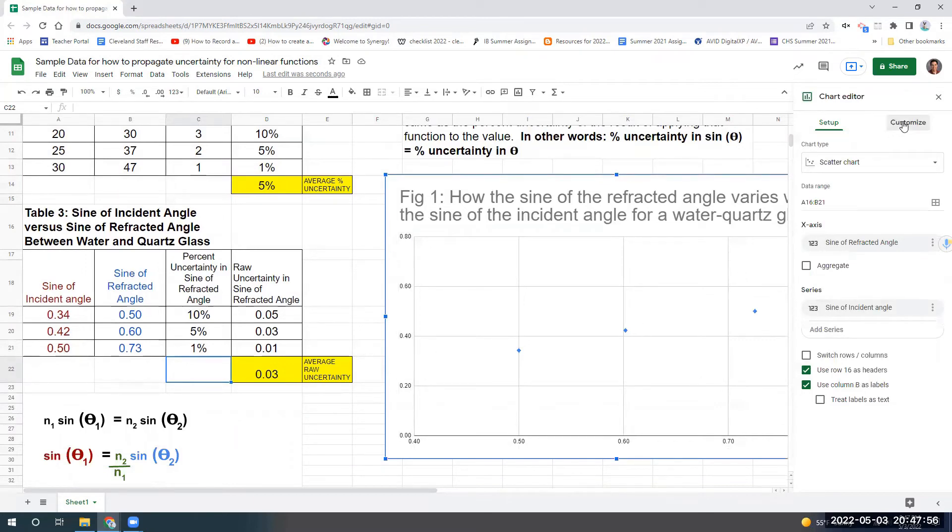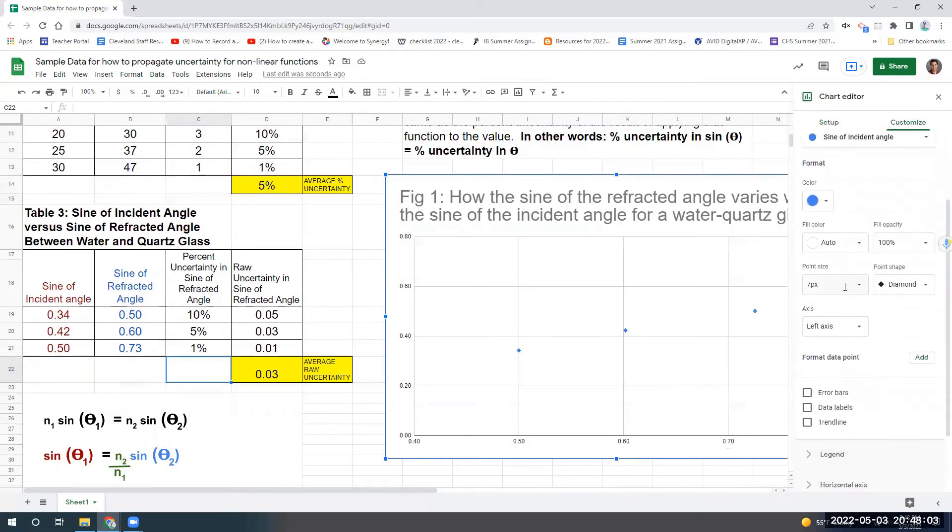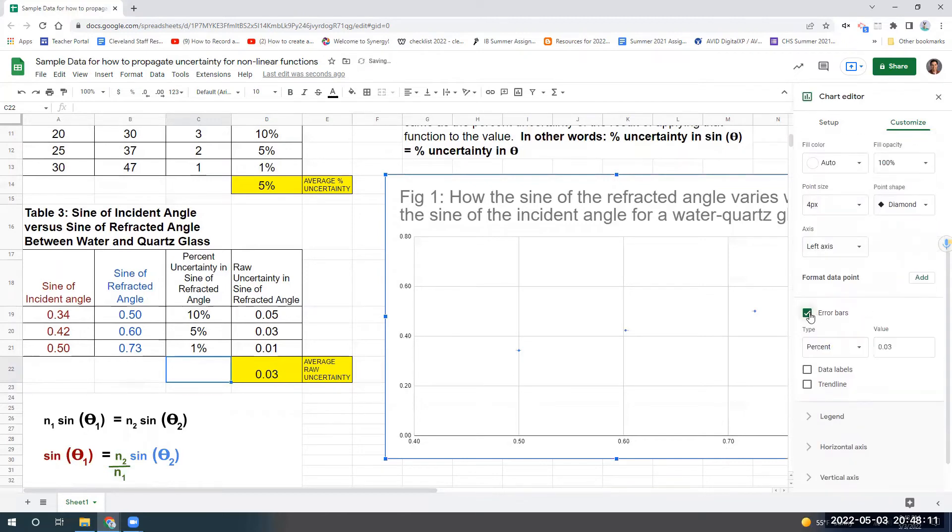And then you're going to go from there to customize. You're going to go to the legend. Excuse me, not the legend. You're going to go to series. And we scroll down here. I always like to make my point size smaller when I get to this spot. I could make it four points, something like that. I want error bars. Now it's going to ask me, do I want type, percent or constant. I want a constant error bar. And what's the value going to be? 0.03. That's what I decided. Notice, boom, the error bars come in.